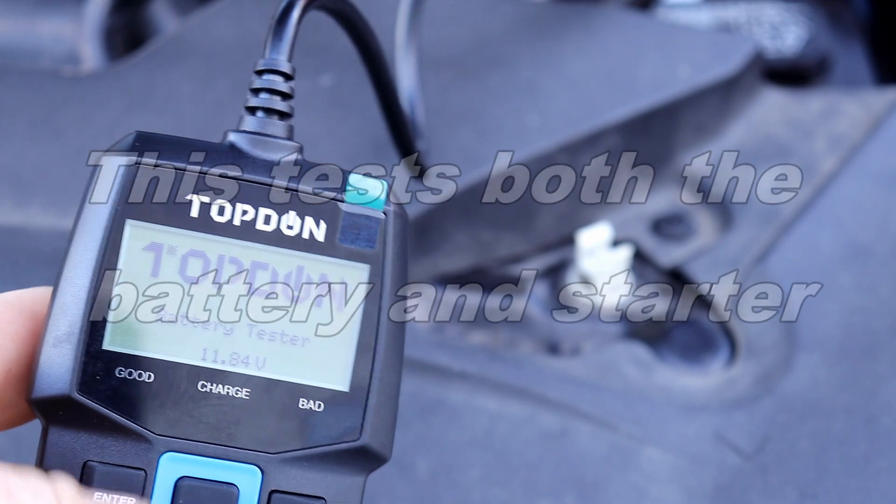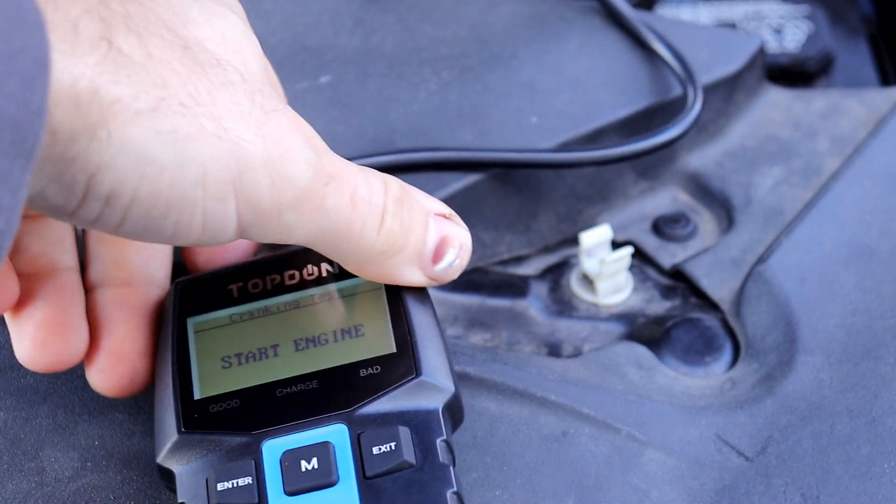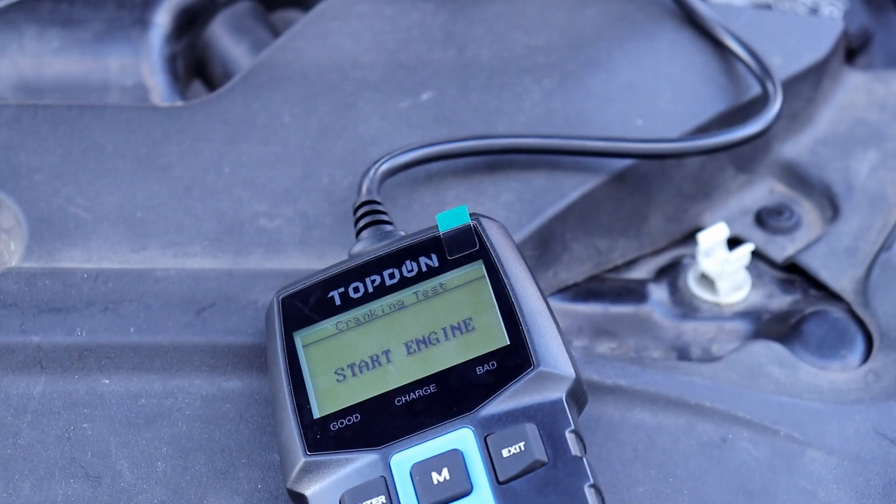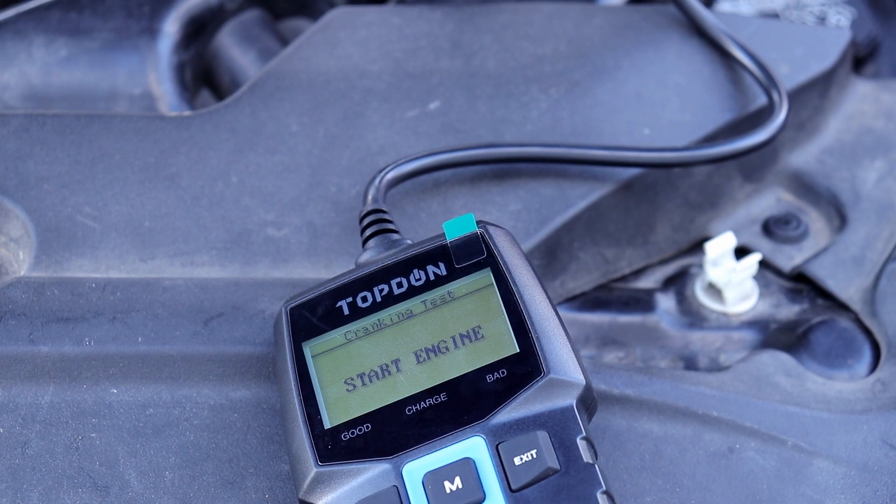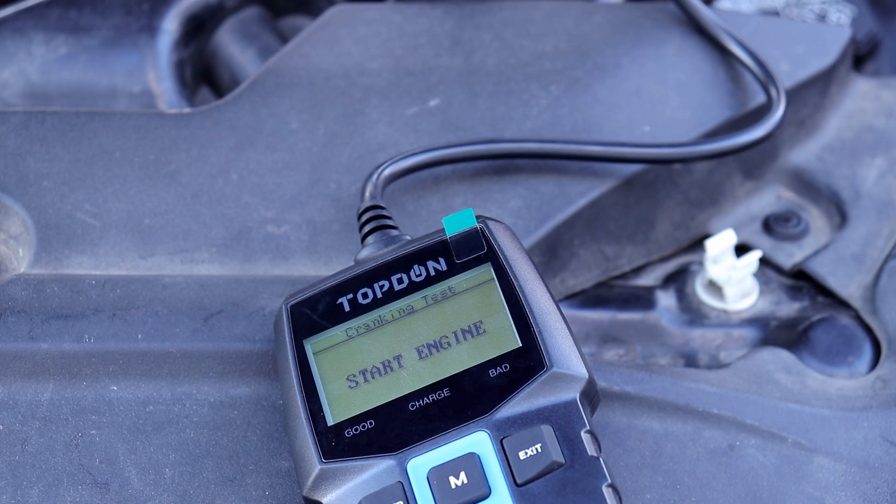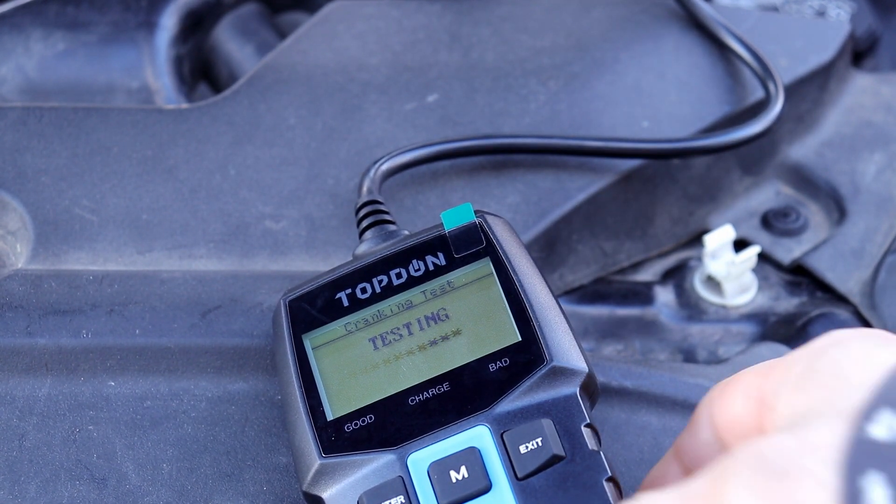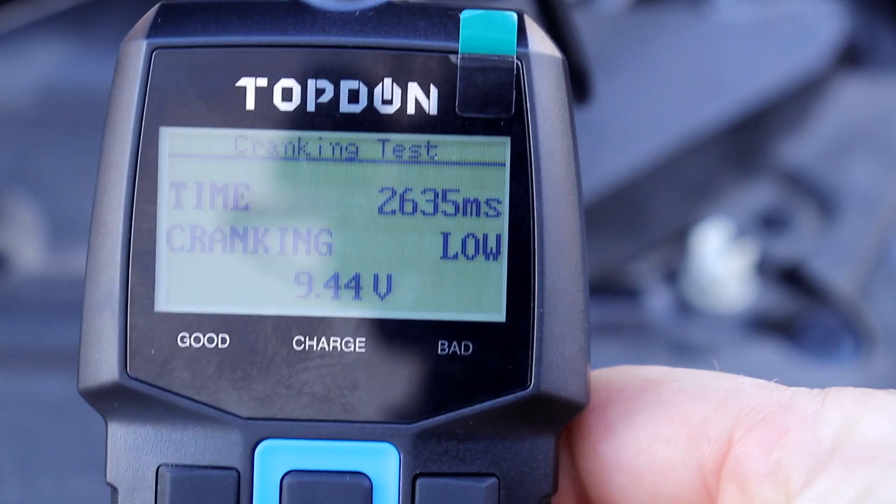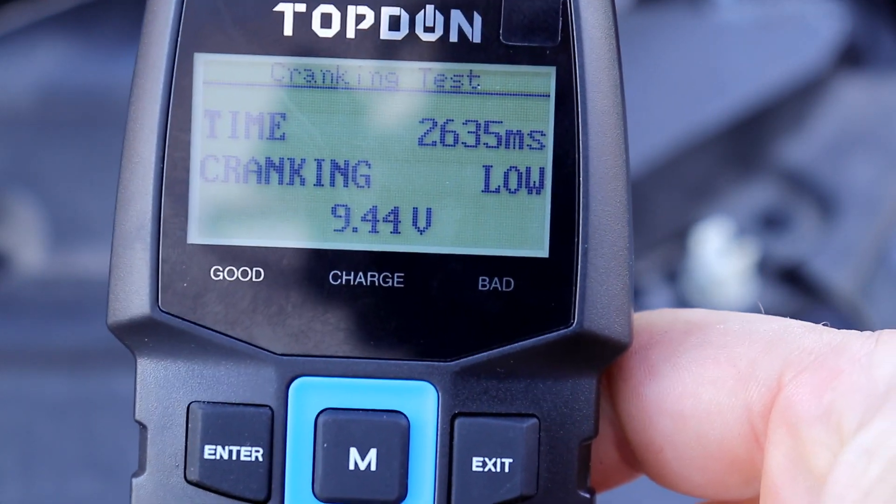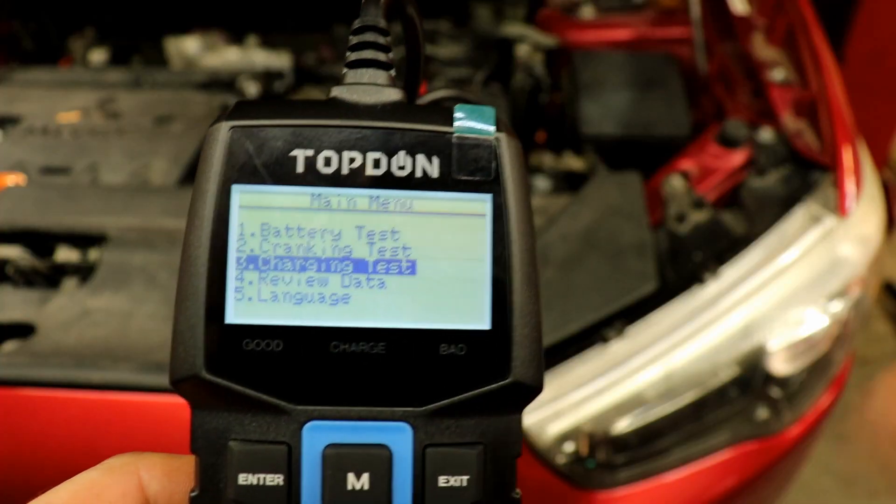Now we'll take a look at the cranking test feature of the Topdon battery tester. This vehicle's been sitting outside overnight and it's pretty chilly. It says low because the battery went down to 9.44 volts and the crank time was 2635 milliseconds, which is acceptable.